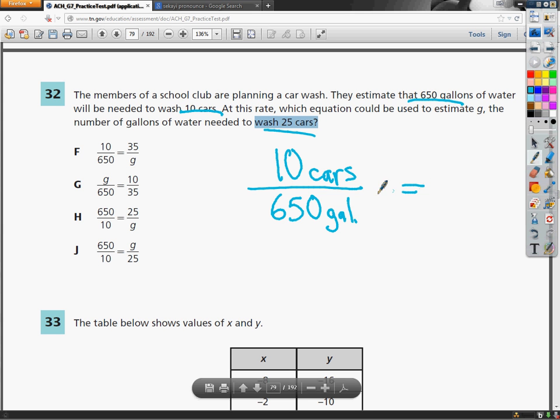In this case, if I have cars on the top floor, I'm going to put cars on top of the other one as well. Same thing with gallons. I know in this situation that 25 cars goes on top and then G on the bottom. I always choose X, I think, G gallons. So I'm going to look for this to be set up in this way. And if not, I could just flip both of them, get the same answer.